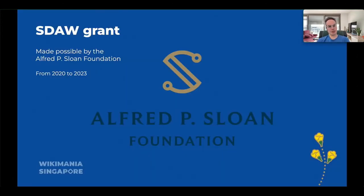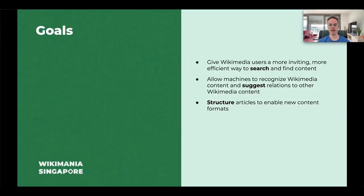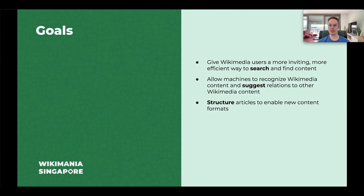Structured data across Wikimedia was made possible by a grant from the Sloan Foundation. The grant started back in 2020 and ended in 2023, and can be seen as a follow-up to a previous grant which enabled structured data on Commons. The high-level goals are all about content: first, to improve content search; second, to make content machine-readable and build connections across projects; third, to shape more structure where data is especially unstructured, typically Wikipedia articles.